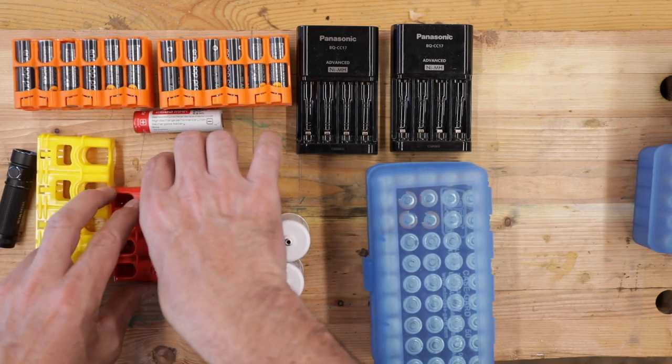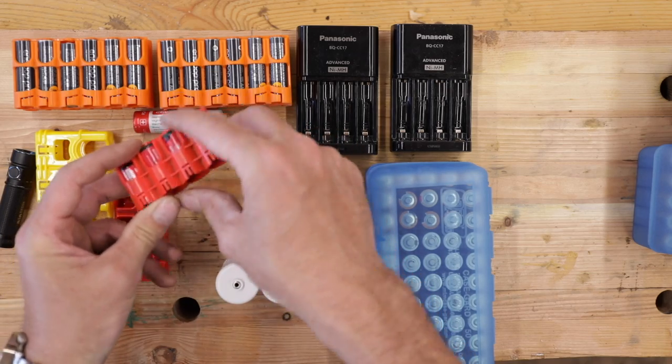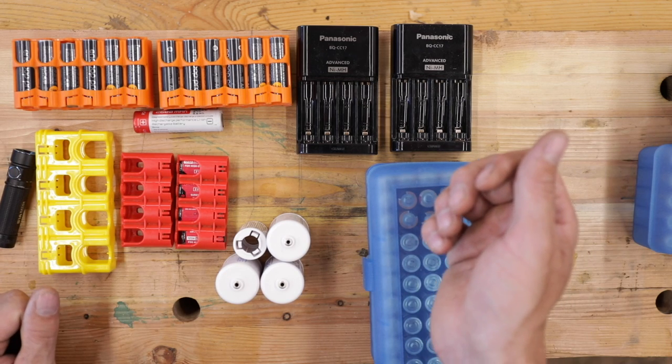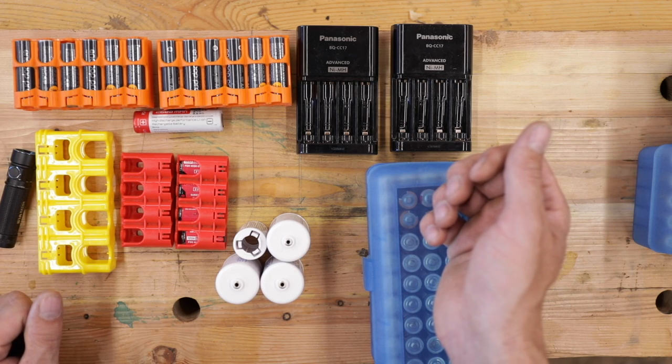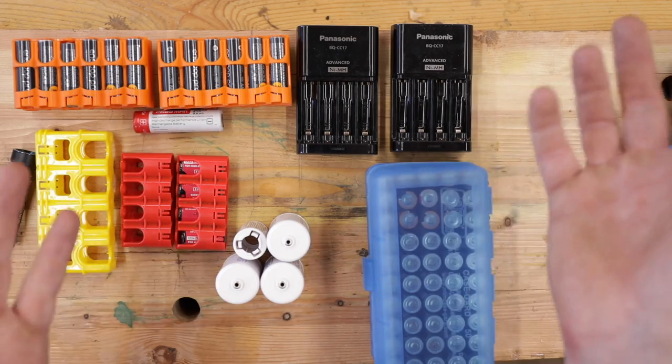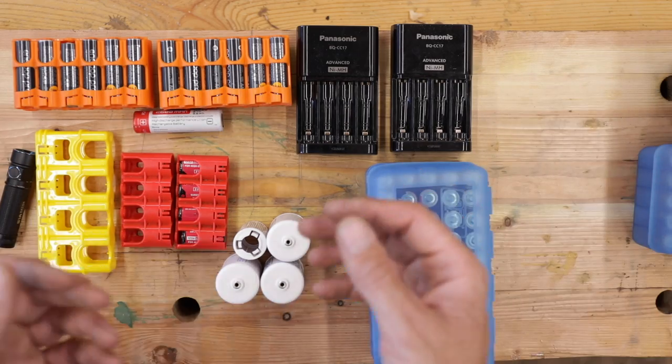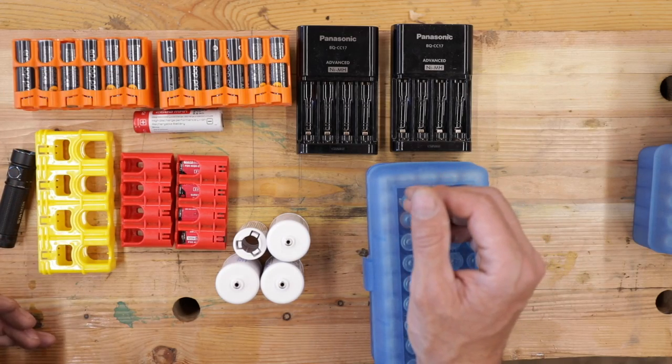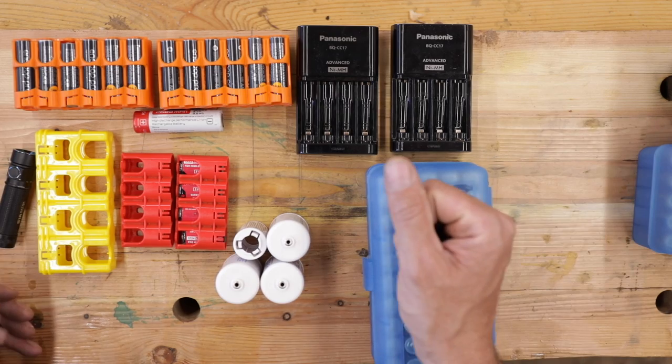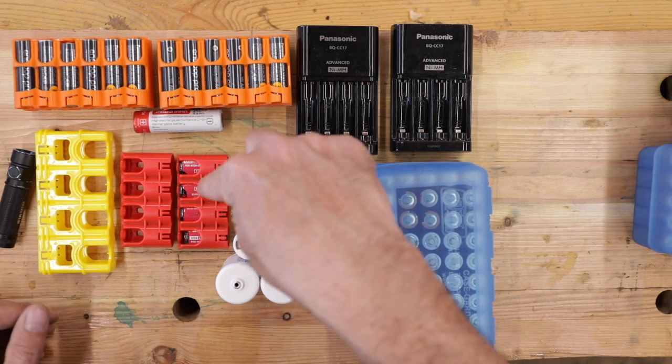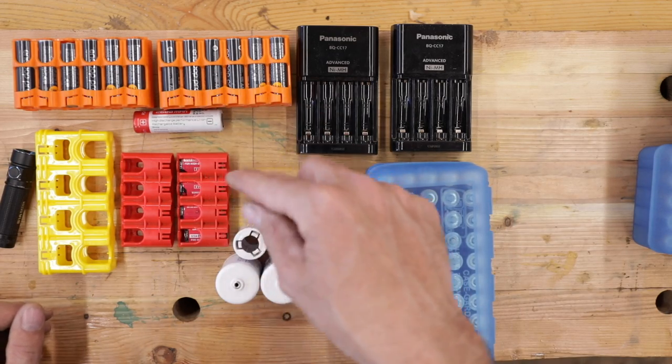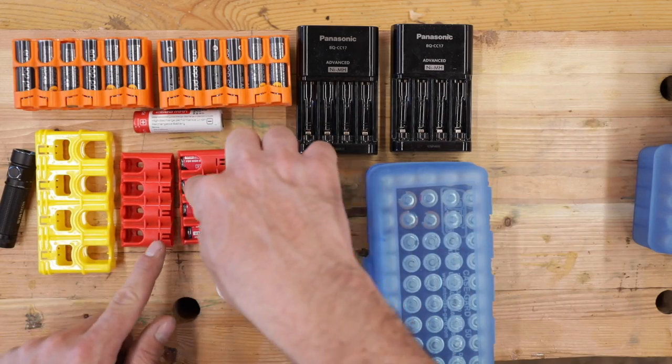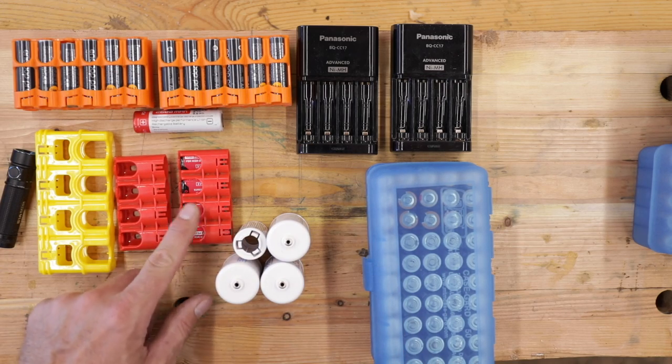I'm also going to be keeping in my system the CR123s. And the only reason that I'm keeping those is because of Surefire. I like Surefire lights and that's the only one that I depend on for a bedside gun. I've tried the cheaper, lesser lights and they just don't work when you need them. So CR123s are going to be in the system for that. I'll change them out annually.